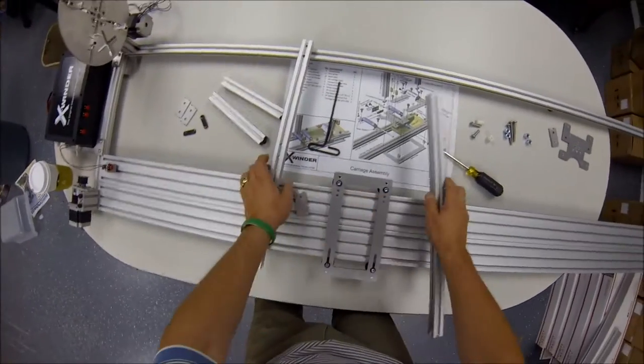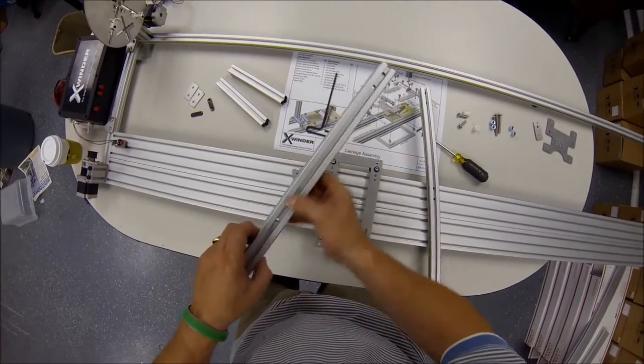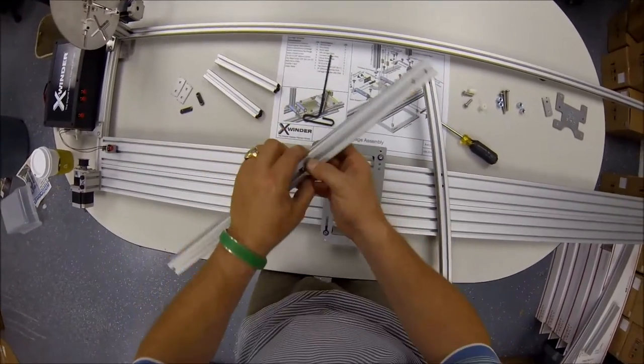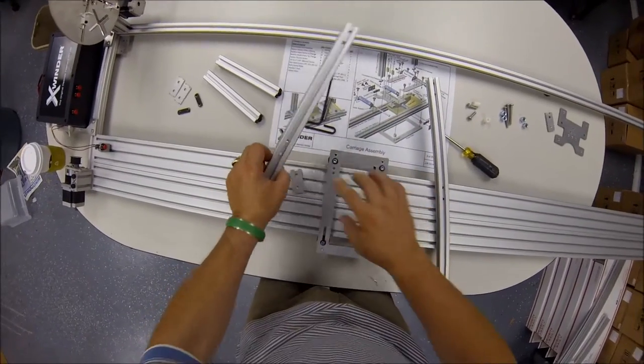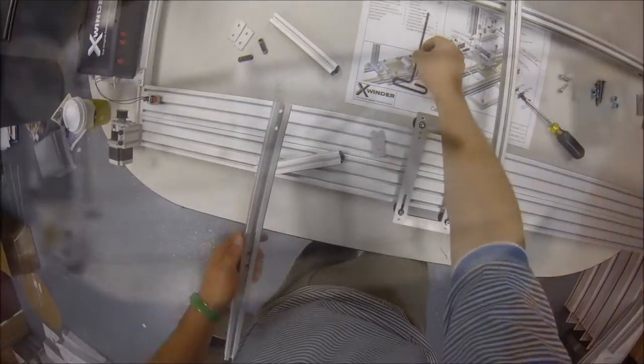So that is a mistake that you will notice if you were one of the first hundred and fifty to receive the X-Winder 2, so please go ahead and bore those out to a seven millimeter diameter, or about 9/32nds.